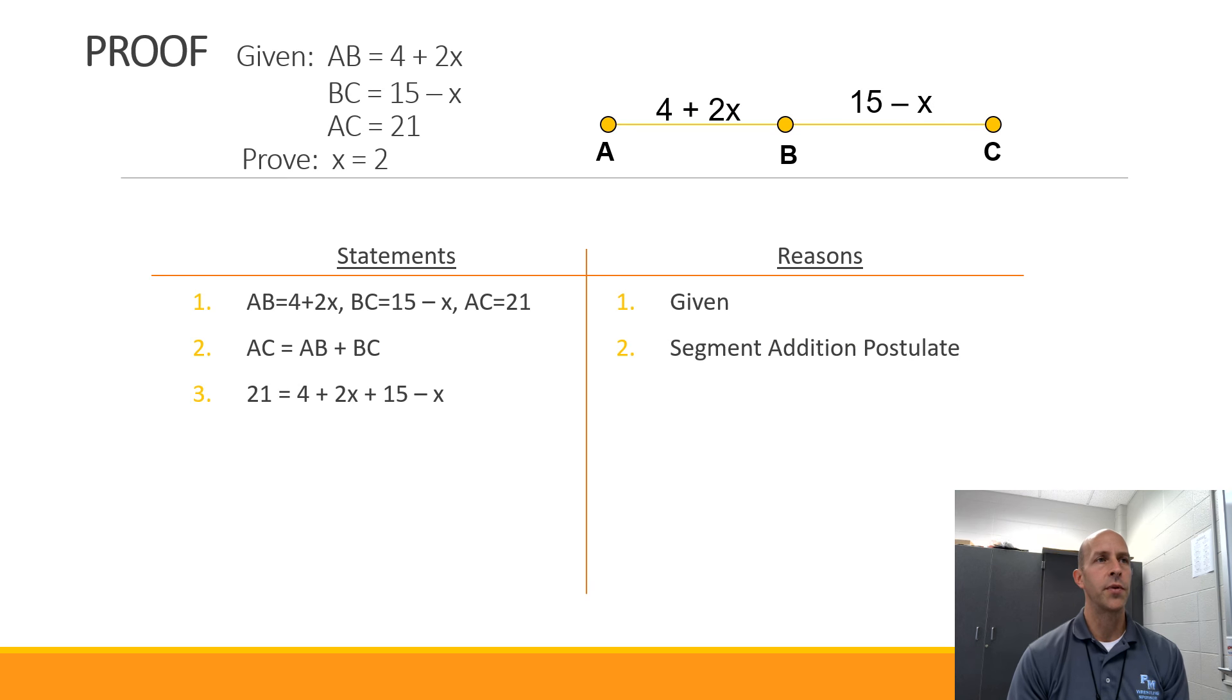Now what I'm going to do is I'm going to substitute the known information from step 1 into step 2. We know that AC in step 1 is 21, so I can change AC in the equation from step 2 to 21. Similarly, I can change AB to 4 plus 2x, and BC can be changed to 15 minus x by the substitution property.